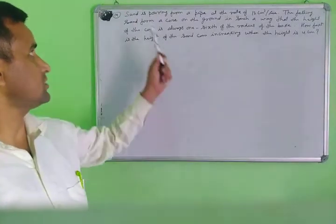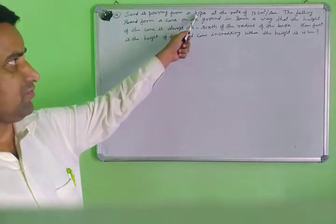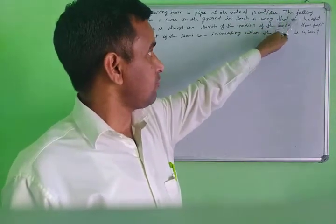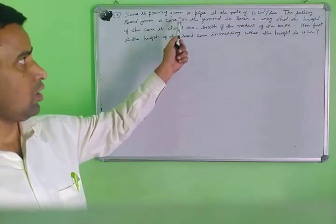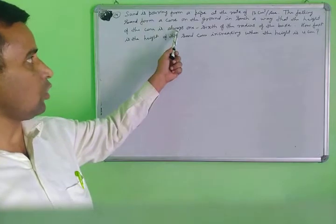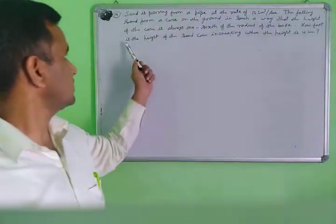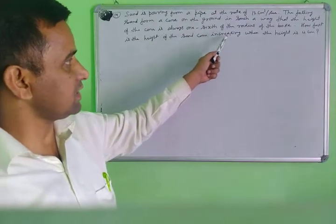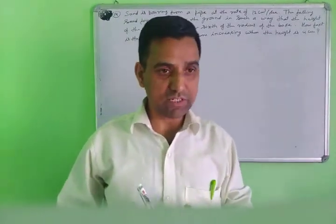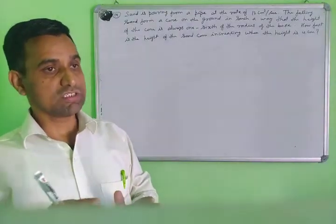Next question — I am taking a very important question, question number 14. The question: sand is pouring from a pipe at the rate of 12 cubic cm per second. The falling sand forms a cone on the ground in such a way that the height of the cone is always one-sixth of the radius of the base. How fast is the height of the sand cone increasing when the height is 4 cm?